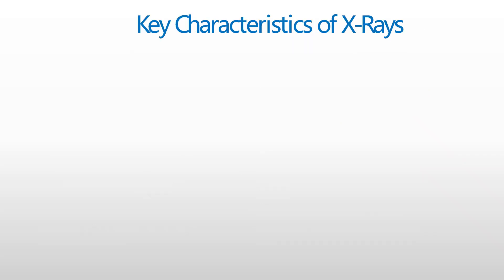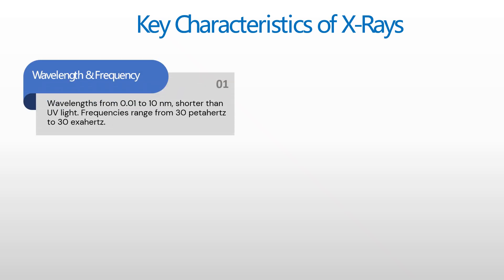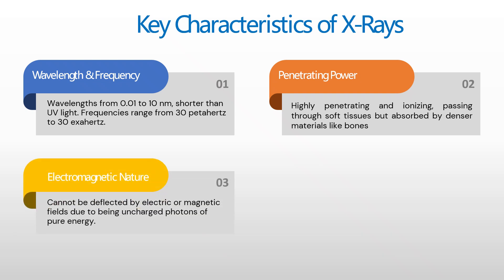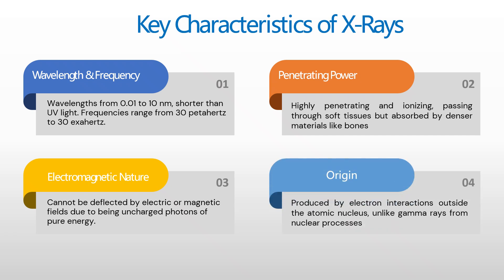Let's see some characteristics of X-rays. They have a very small wavelength in the range of certain nanometers, and with respect to that, frequency will be of higher order, because wavelength and frequency are inversely proportional to each other. They have high penetrating power and can pass through soft tissues but are absorbed by denser materials like bones. They are electromagnetic radiations, and the origin for the generation of X-rays requires electron interactions outside the atomic nucleus.